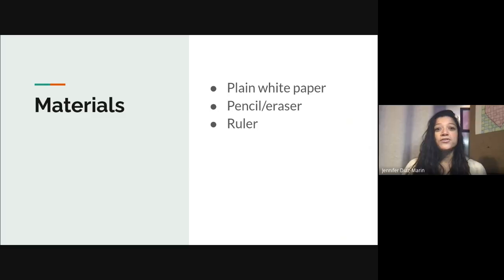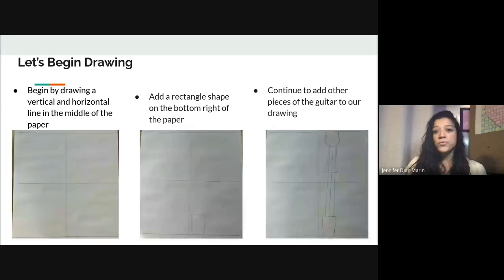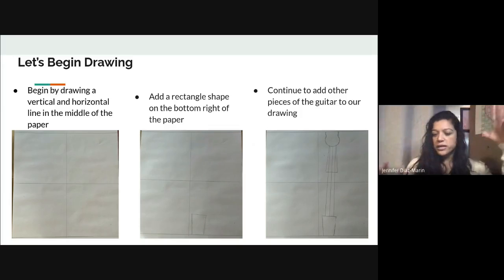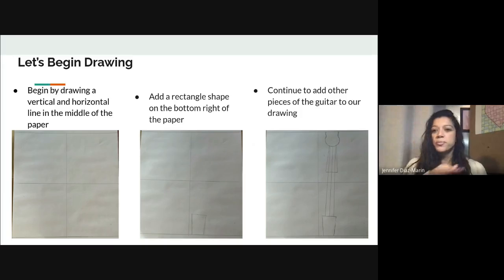For today you're going to need plain white paper, a pencil, an eraser, and a ruler. Our artwork is going to be inspired by Romare Bearden — a drawing with big shapes and a big body. First, we're going to divide our paper in four. Using a pencil, you're going to draw a horizontal line and a vertical line in the middle of the paper.